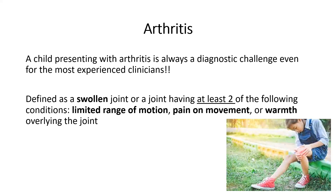Arthritis is defined as either a swollen joint, which is solid evidence of arthritis, or — if the joint is not swollen — at least two of the following: limited range of movement, pain on movement, or warmth overlying the joint. So limited range of movement plus warmth constitutes arthritis even without swelling.